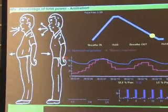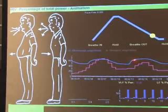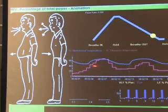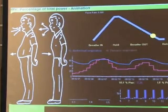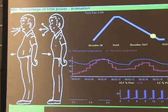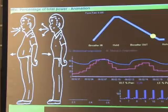The blue line is what you get off the respiration sensor breathing in and out. And here's the heart rate following it up and down. It only does this if you breathe at a relatively slow rate, somewhere between five and seven breaths per minute — otherwise they desynchronize. So that's what we're trying to teach people to do.